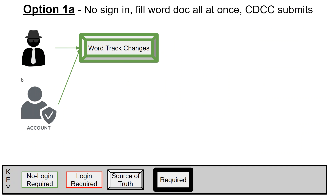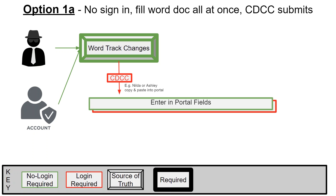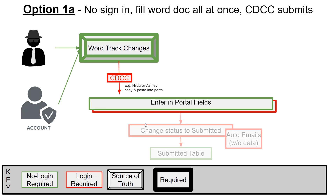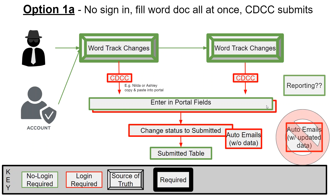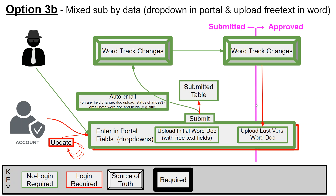The other method is regardless of who you are, you just send in a Word document and then someone has to copy and paste it into the portal. All the fields are there including the free text, but then that's out of date. Again, you do those track changes in Word and then it's copy and pasted again. So those are the two main ones, and I think people are leaning towards the first one.